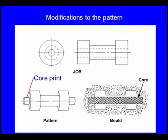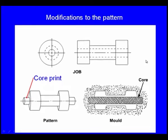What are these allowances? Allowances means some increment or decrement to the dimension, whereas the second modification is the provision for the core prints. In the previous class, we have seen the concept and importance of the core print. The core print is used to support the core. Now let us consider the same example which we have seen in the previous class. This is the component which we want. This component has an axial hole. This is the axis of the job.